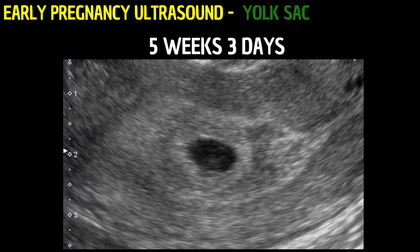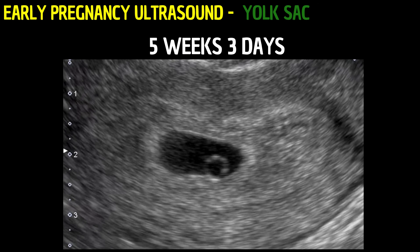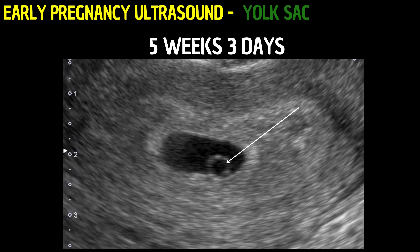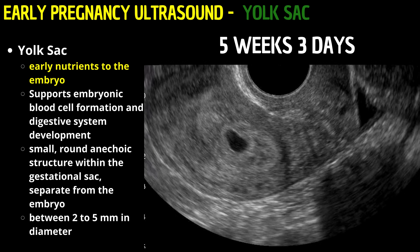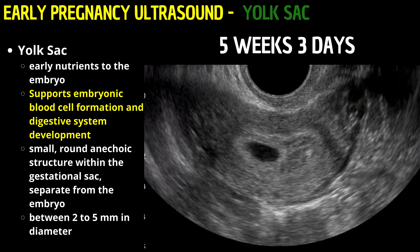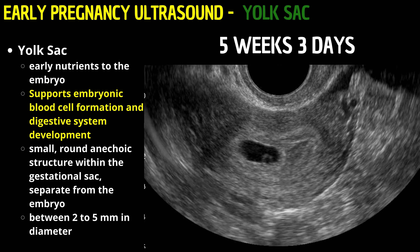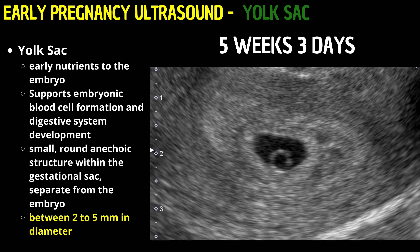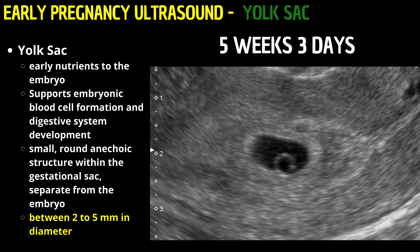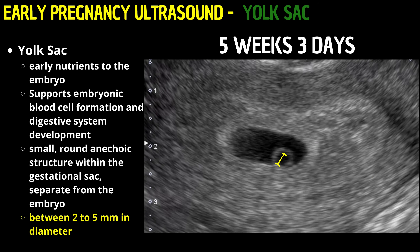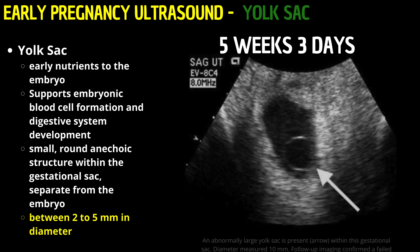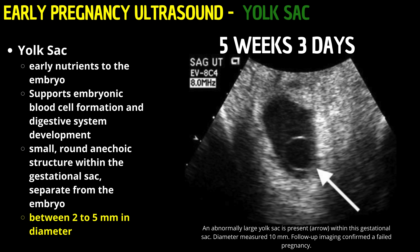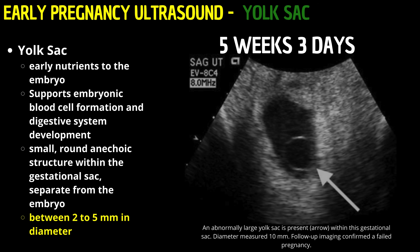Around five weeks and three days into gestation, we witness the vital development of the yolk sac within the gestational sac. The yolk sac serves as a critical nutritional and developmental structure for the embryo, providing essential nutrients and supporting embryonic blood cell formation. At this stage, the yolk sac is typically visualized as a small, round, anechoic structure within the gestational sac, distinctly separate from the embryo. Its diameter usually measures between 2 to 5 millimeters. A yolk sac significantly larger or smaller than expected, or one that appears irregular rather than round, may suggest chromosomal anomalies, embryonic developmental delays, or an increased risk of miscarriage.